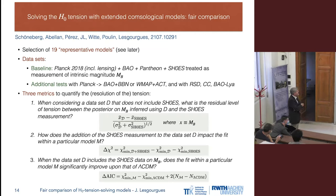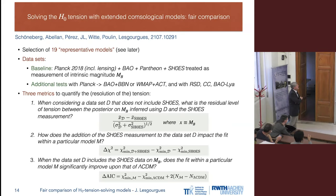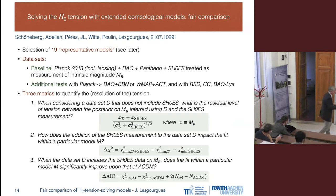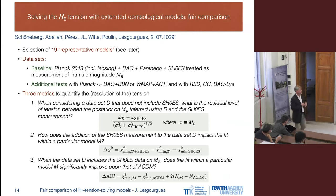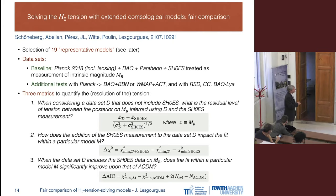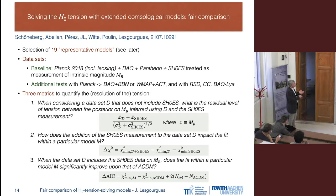A better approach is to compute the difference in minimum chi-square: fitting the model to baseline plus SH0ES, minus the fit to baseline alone, minus the fit to SH0ES alone. This answers how the addition of SH0ES impacts the fit within a given model. These two criteria give exactly the same answer when the distributions are fully Gaussian — there is a mathematical proof of this — but the second can be better generalized to non-Gaussian posteriors.